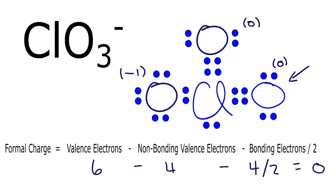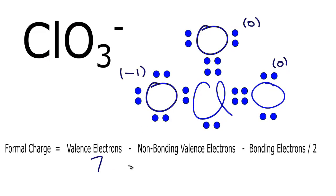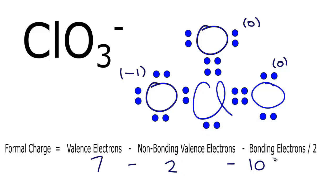Now let's look at the chlorine in the center. Chlorine is in group 7A, or group 17, so it has seven valence electrons. We subtract the non-bonding electrons — there are only two non-bonding valence electrons for this chlorine. Then we subtract the bonding electrons: two, four, six, eight, ten, divided by two. Seven minus two is five, minus ten over two is zero. So the formal charge on chlorine is zero.